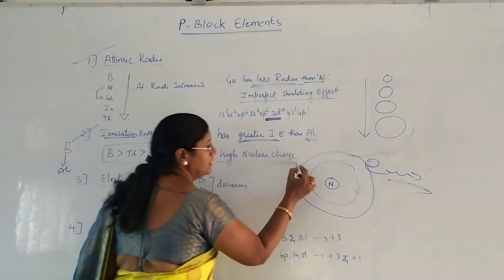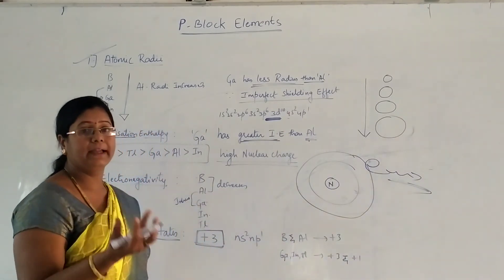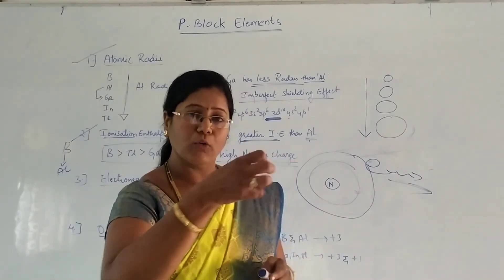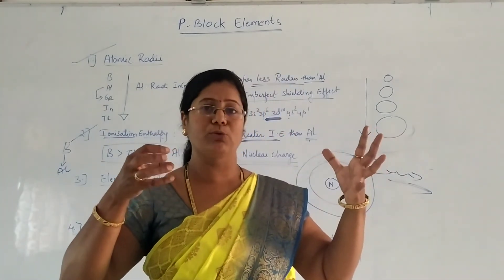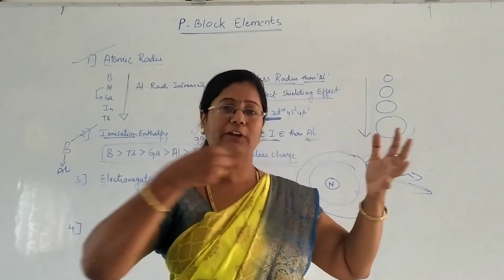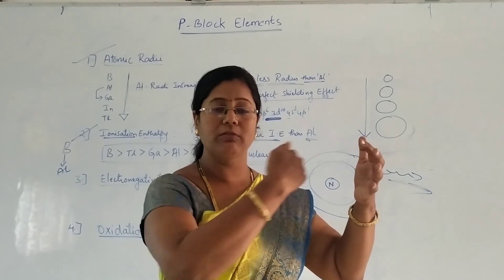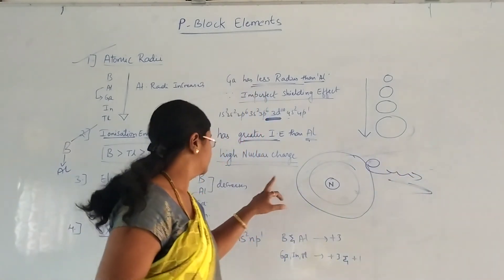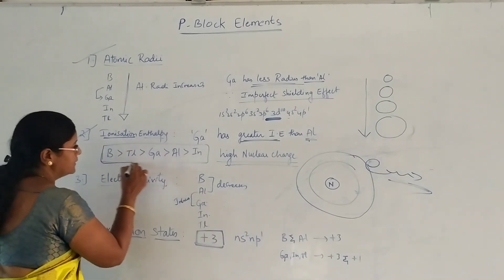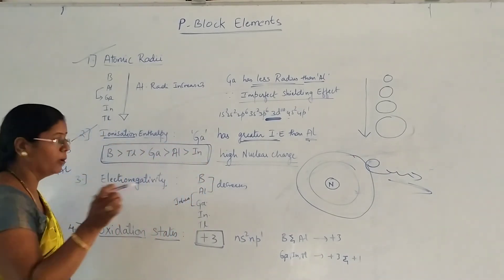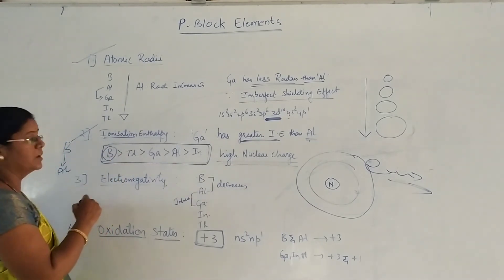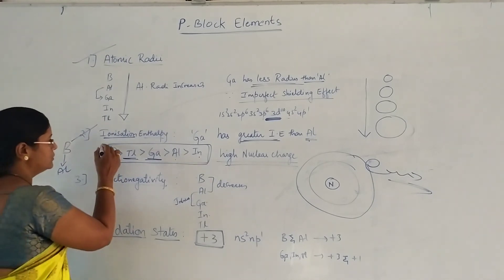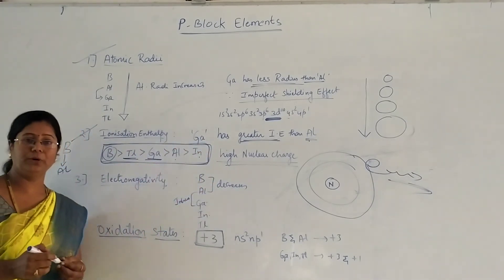Additionally, because of the high nuclear charge and the fact that the d-electrons do not properly shield the outermost electrons, the attraction force is greater in Gallium. This causes Gallium to deviate — its ionization enthalpy is greater than Aluminium. So this is another deviation from the normal trend in the Boron family, again explained by the imperfect shielding effect.